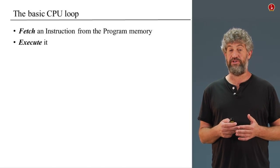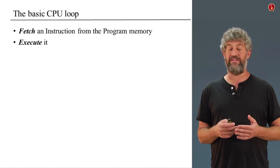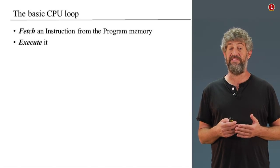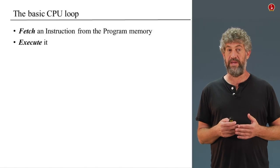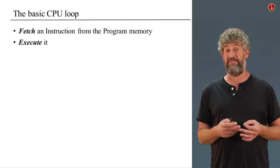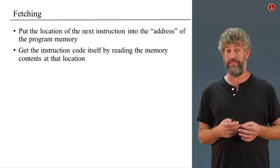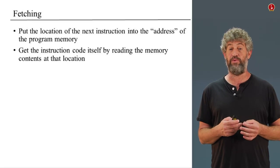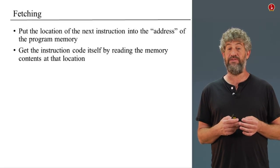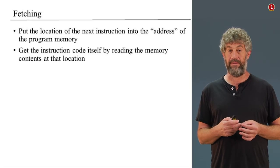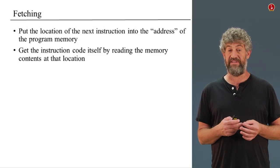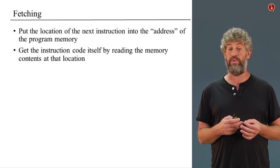Let's first talk about fetching. How do you get the next instruction that you need to execute? Where is the next instruction located? It's in the program memory, it's in the memory. Where in the memory? At the address specified by our program counter. So we need to put the location of the next instruction into the address of the program memory, and then we read the contents of that memory to get the instruction code we need to execute.